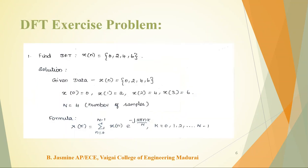Here is a DFT exercise problem. The discrete signal x(n) has samples: 0, 2, 4, 6. The positions of the samples are n = 0, 1, 2, 3 respectively. From the given data: x(0) = 0, x(1) = 2, x(2) = 4, x(3) = 6. The total number of samples is capital N, and since there are four samples, N = 4.